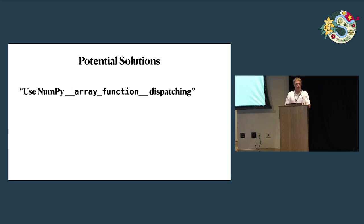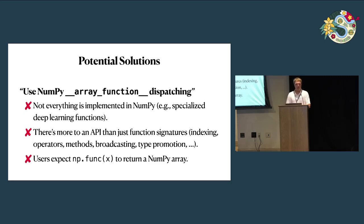Another thing is the __array_function__ protocol — this lets you take NumPy functions and use them as a dispatch mechanism, passing your own custom object into them. But there are a few problems: not everything is implemented in NumPy, and there's a lot more to an array API than just function signatures — there's also indexing, type promotion, and semantics. The biggest problem is that NumPy has forever been an array library and users really expect NumPy to return a NumPy array, not to act as an array dispatching tool.